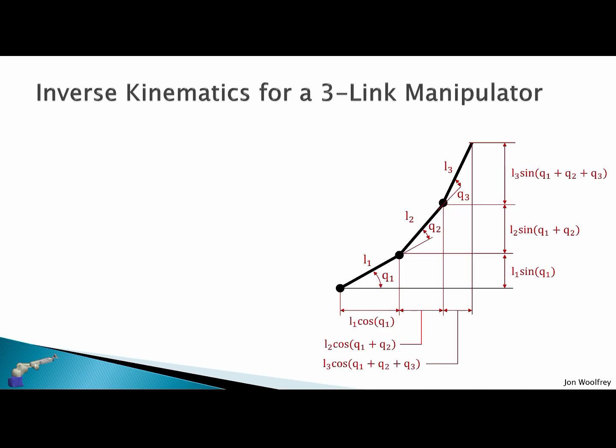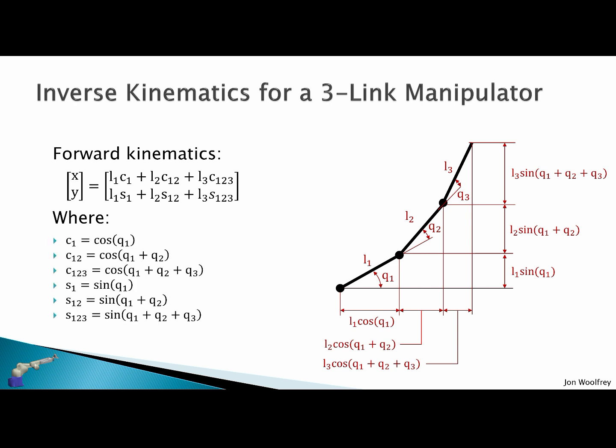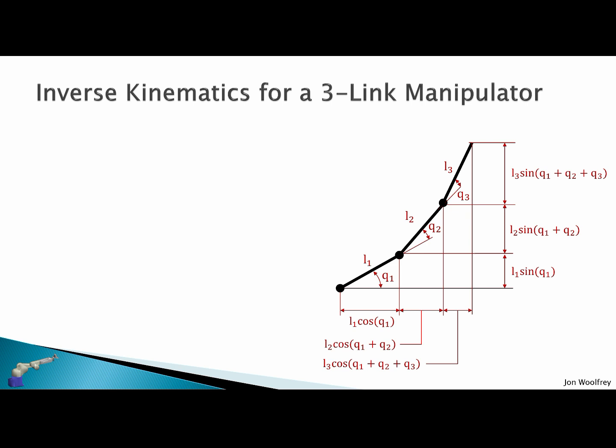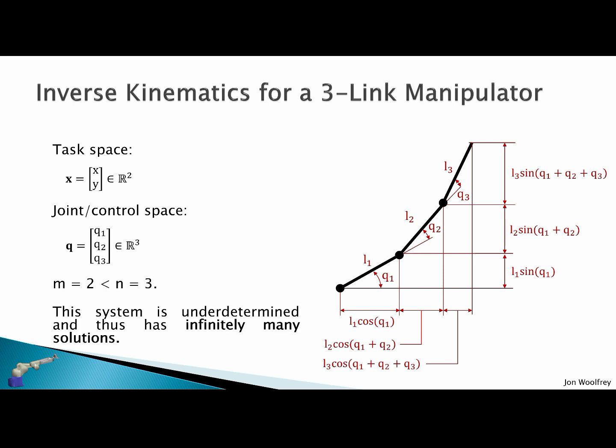Let's try and solve the inverse kinematics for a three-link manipulator. The forward kinematics expression is given by x is the sum of all these, where I've used this notation because the trigonometry is very long and complicated. The task space is given by x and y in the set of real values in two dimensions. And the joint or control space is given by q1, q2, q3 in the set of real values in three dimensions. What this means is that m which is equal to two is less than n which is equal to three. This system is underdetermined and thus has infinitely many solutions. So how are we going to solve this problem?